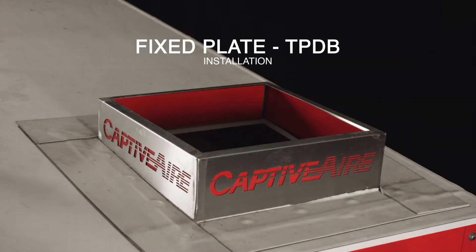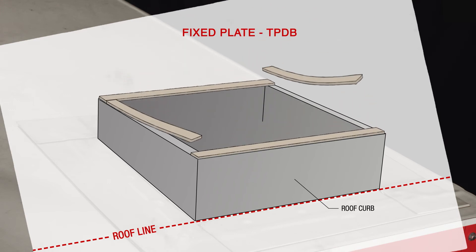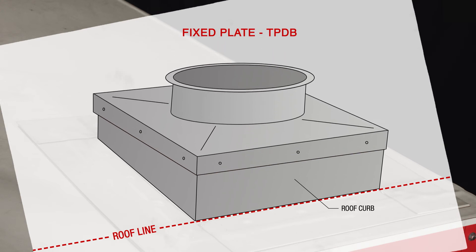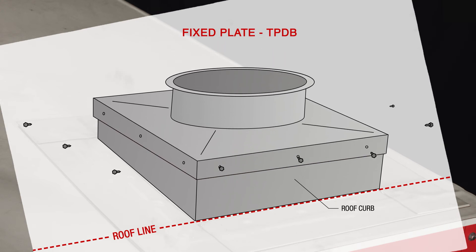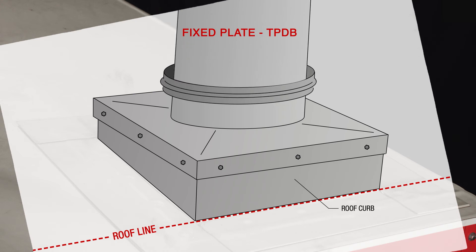To install a fixed TP DB plate, you must first add gasket material to the edges of the top of the curb as shown. Then set the transition plate on the curb. Lastly, secure the plate to the sides of the curb using three self-drilling fasteners per side. Do not attempt to mount a fan to this transition plate, as it is designed for continuing duct runs.